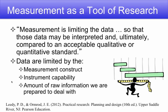I apologize for this slide being so text heavy — I really try to avoid that. But this comes from ideas in a book we use at the University of Georgia: Leedy and Ormerod's Practical Research, Planning and Design. It talks about measurement as a tool of research and the importance of measurement as limiting the data, because there is far more data than you could ever possibly collect. The data will be limited by the measurement construct — the thing you're trying to measure, like learning, motivation, or engagement — the instrument capability, such as an online survey versus a paper survey, and the amount of raw information you are prepared to deal with as a researcher.